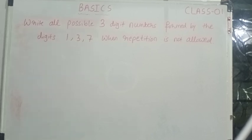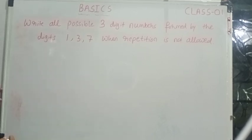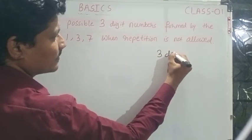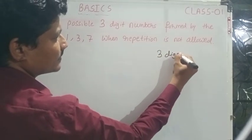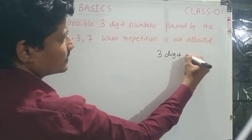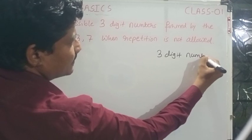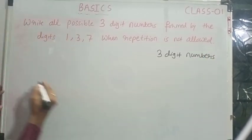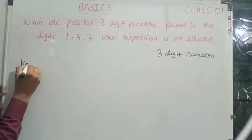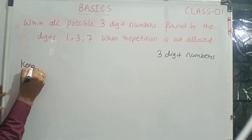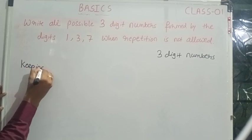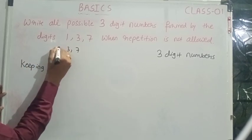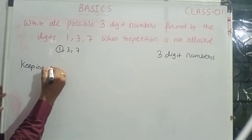Write all possible 3-digit numbers formed by the digits 1, 3, and 7 when repetition is not allowed. For the 3-digit number, keeping 1, 3, and 7, we fix each digit at the unit's place in turn.